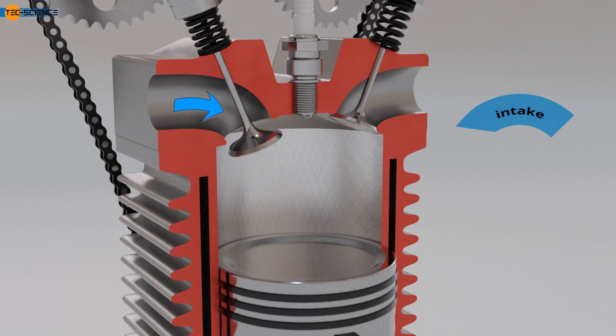In engines with internal mixture formation, only air is drawn in, and the combustible fuel-air mixture is created inside the cylinder. This is the case, for example, in diesel engines or gasoline-direct injection engines. External mixture formation refers to when the fuel-air mixture is mixed outside the cylinder and is already combustible when drawn in. This is the case, for example, in carburetor engines or engines with intake manifold injection.